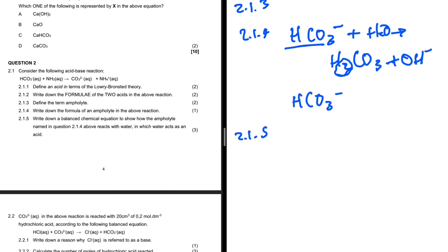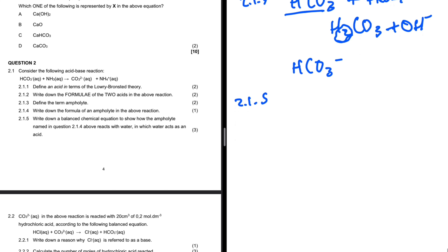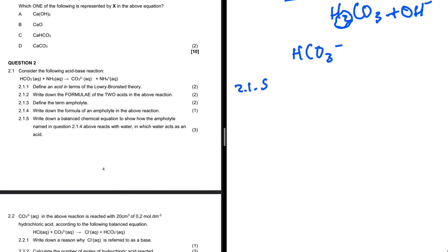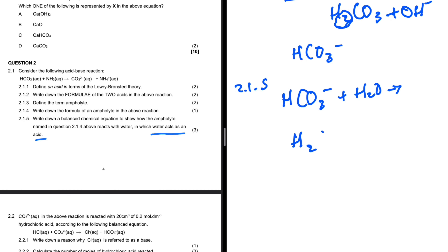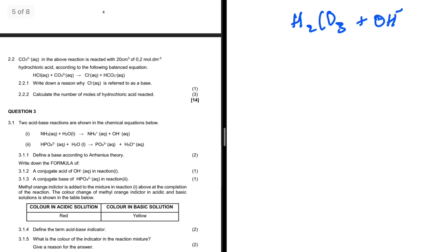Question 2.1.5 says write down a balanced chemical reaction to show how the ampholyte reacts with water in which water acts as an acid. We have HCO₃⁻ plus H₂O. Since water acts as an acid it will donate a proton, giving us H₂CO₃ plus OH⁻.